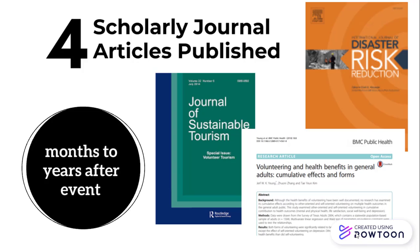The fourth step doesn't happen until months or years after the event. This is when scholarly journal articles will be published. You may encounter scholarly journal articles in your academic research. Scholarly journal articles take a little while to create — part of the reason is that they take time to publish, and they also go through something called the peer review process.